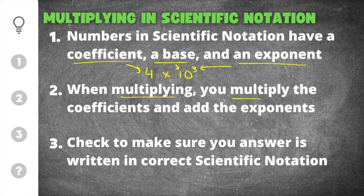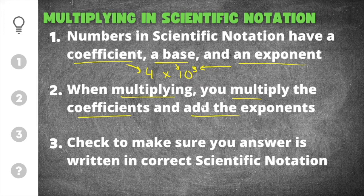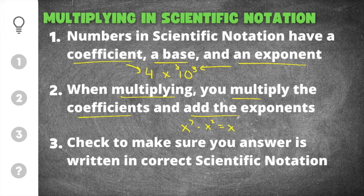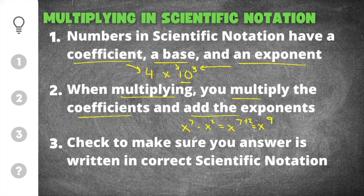When multiplying, you multiply the coefficients and you add the exponents. You take the coefficients out in front, multiply them together, and the exponents get added. Adding the exponents is the same rule as the product rule for exponential terms — for example, x to the 7th times x to the 2nd gives x to the 9th. That rule is the same for multiplying in scientific notation, except the base is always 10.